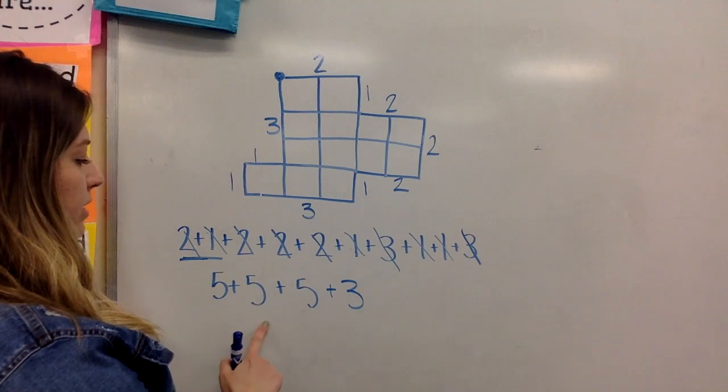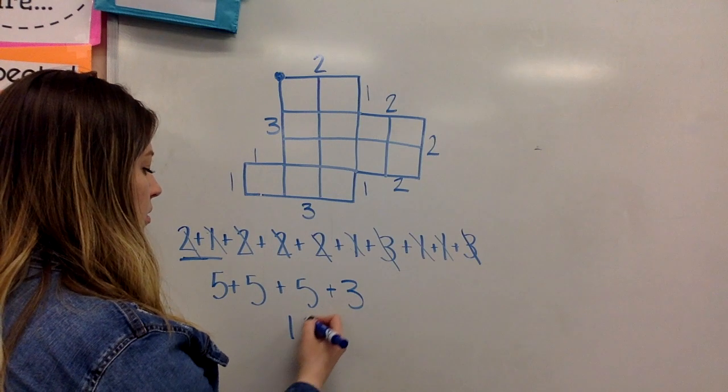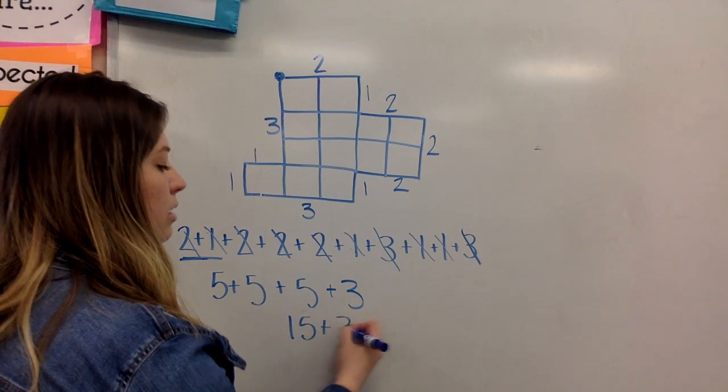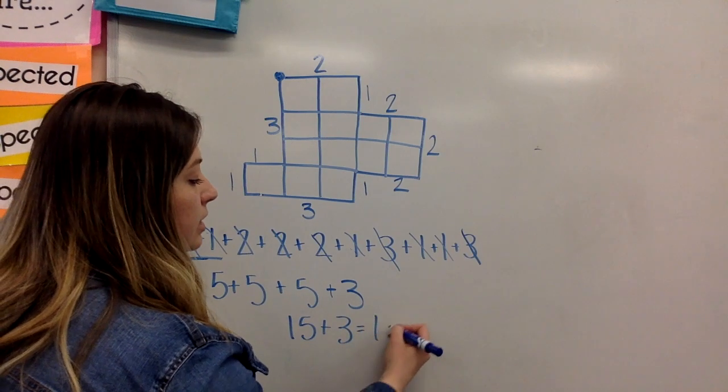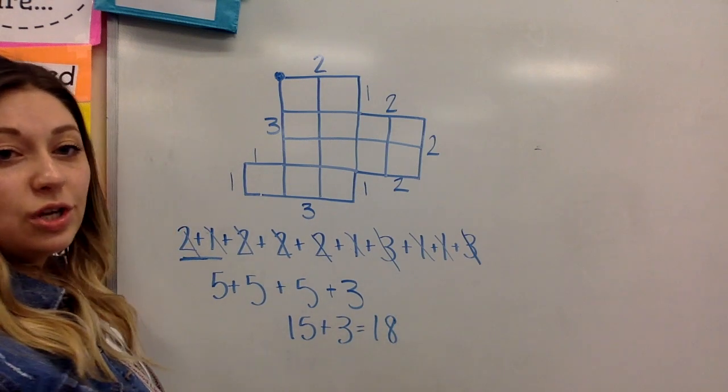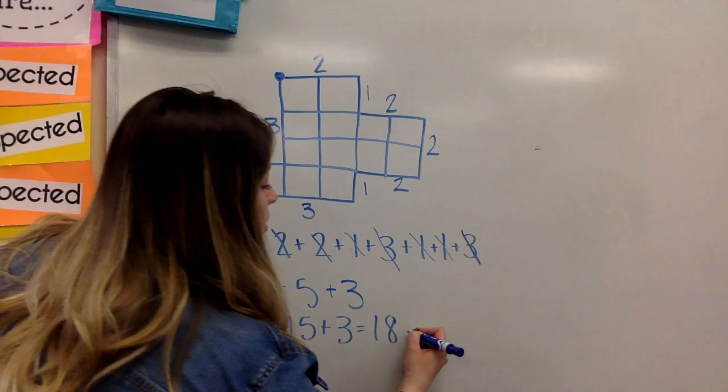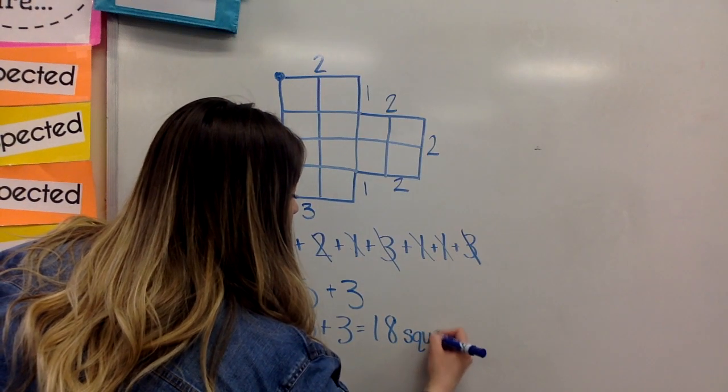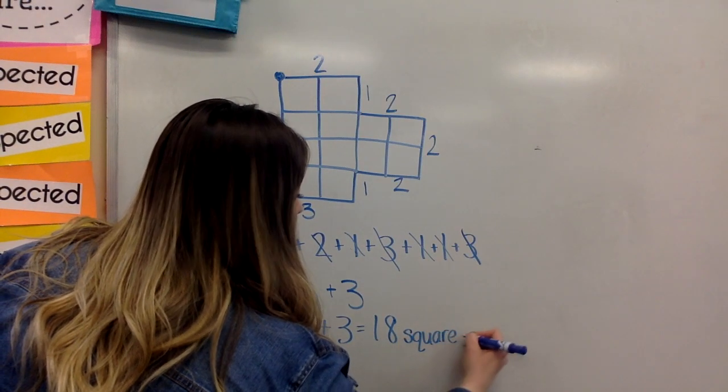So five, 10, 15, plus three, I know is 18, and I'm going to go ahead and label this as square units.